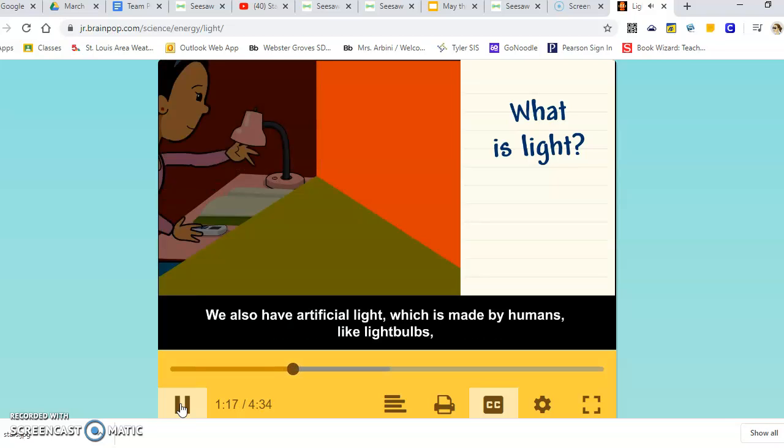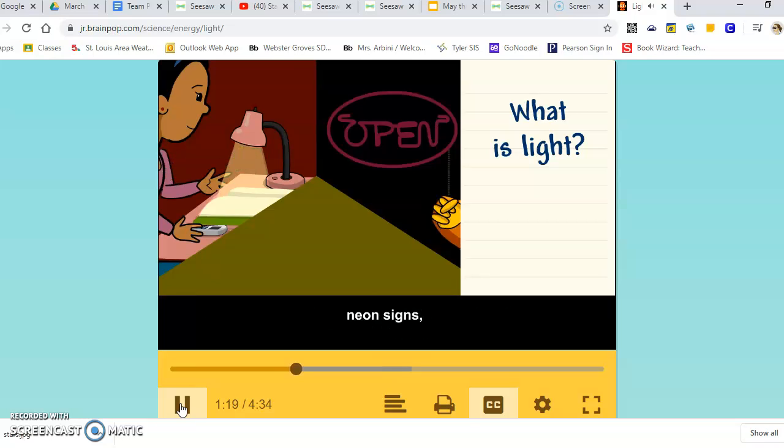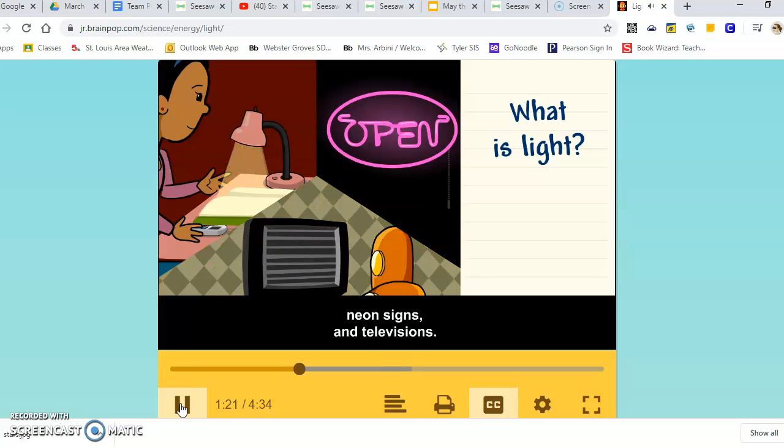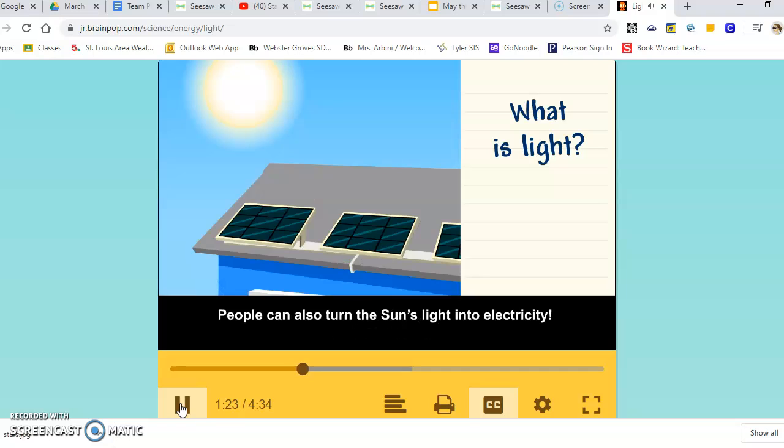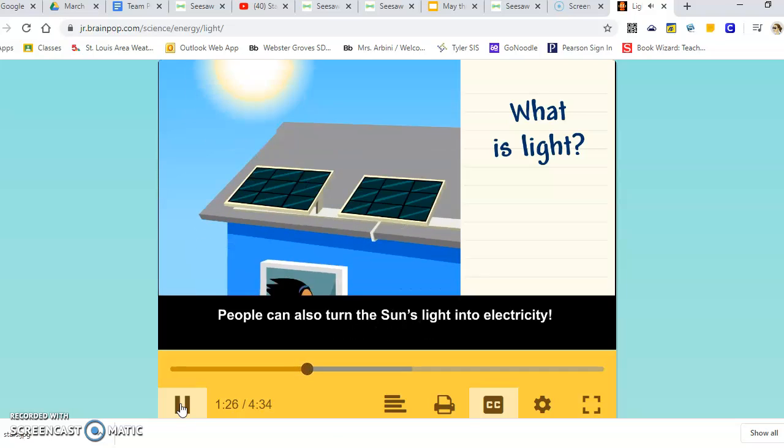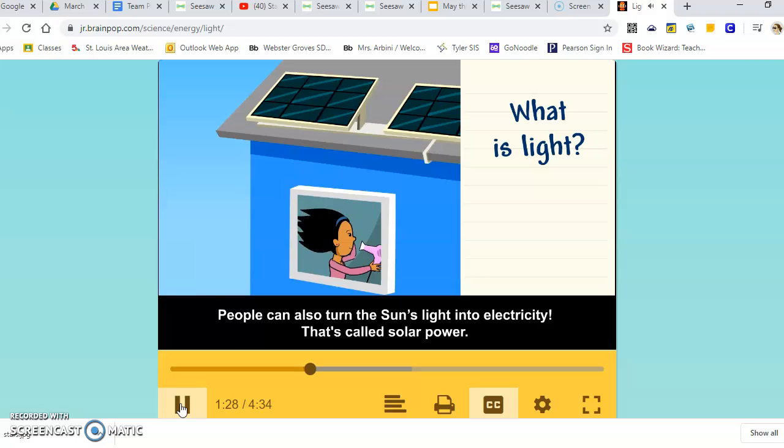which is made by humans, like light bulbs, neon signs, and televisions. People can also turn the sun's light into electricity. That's called solar power.